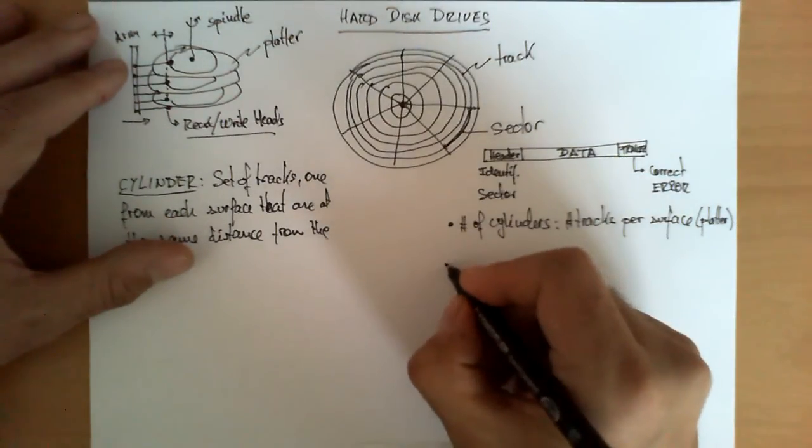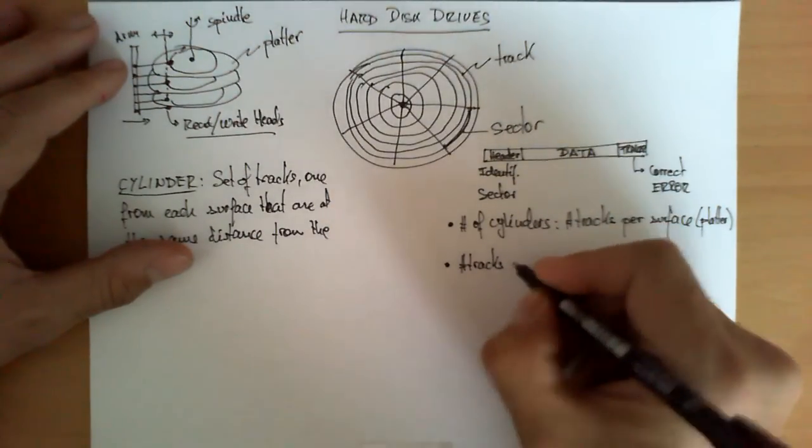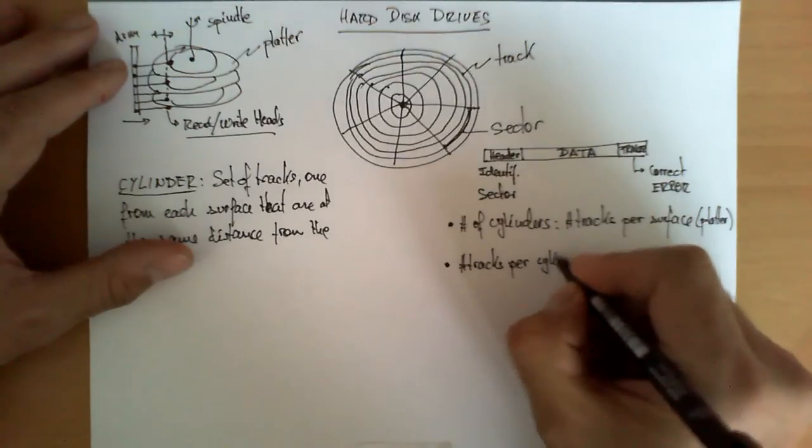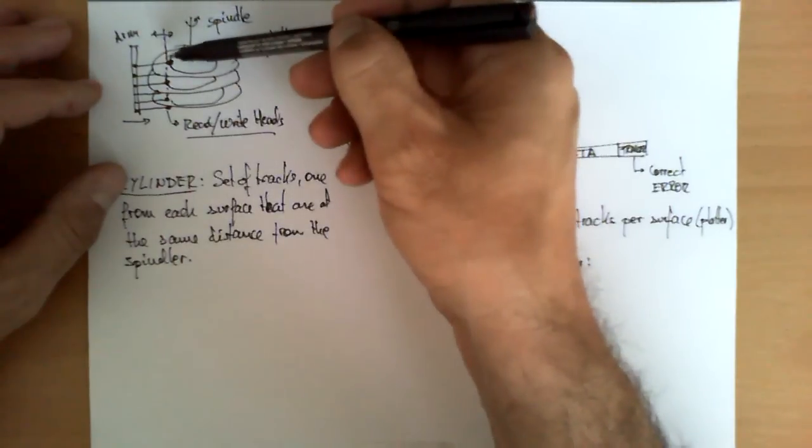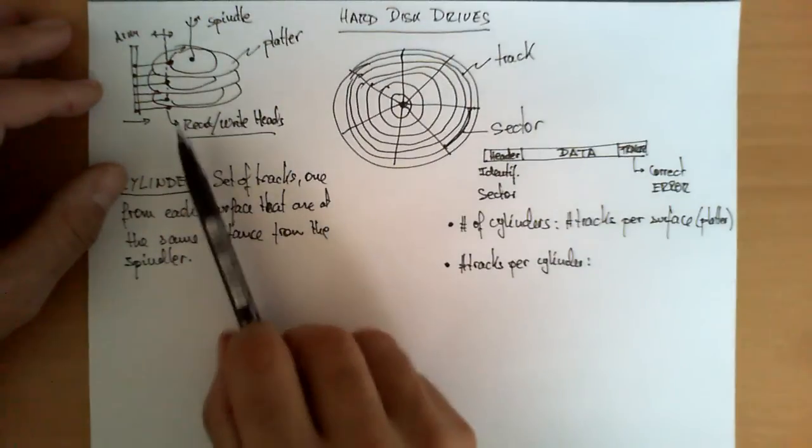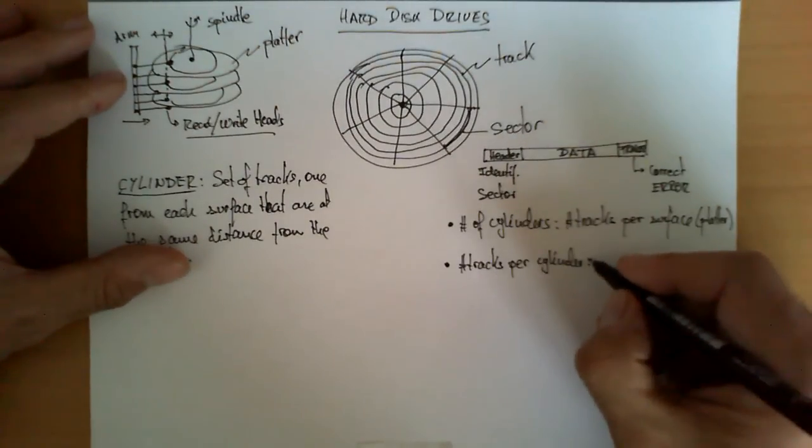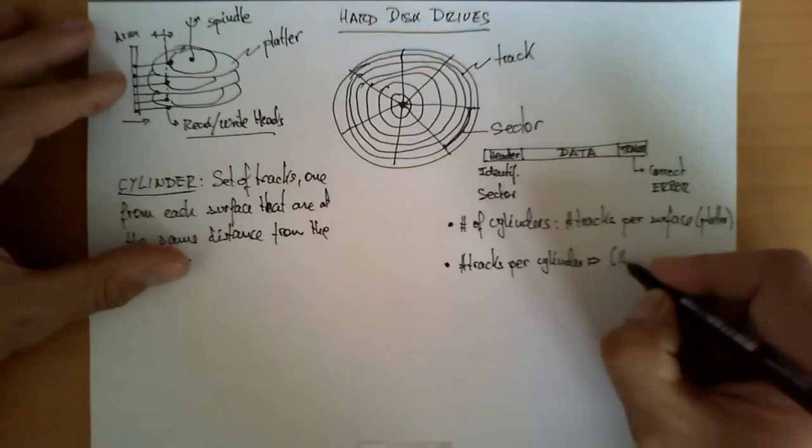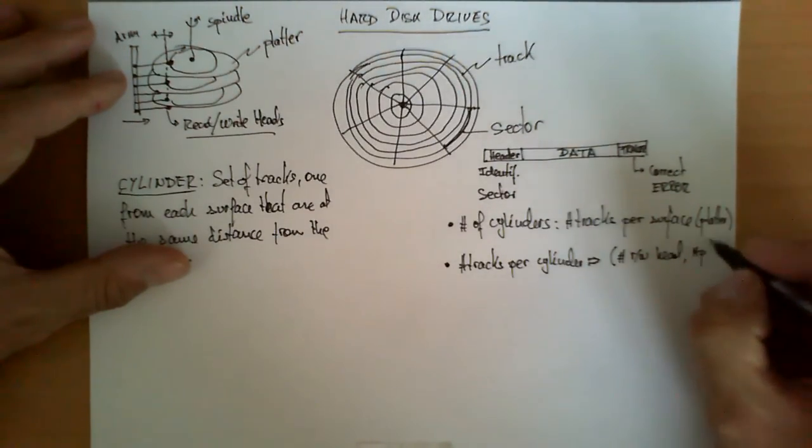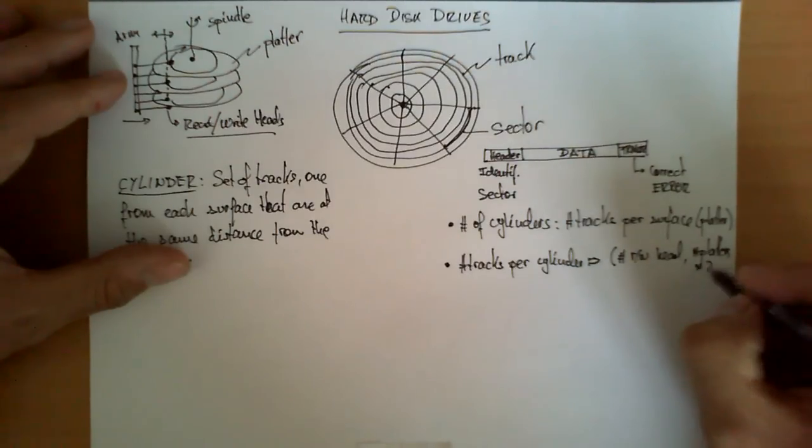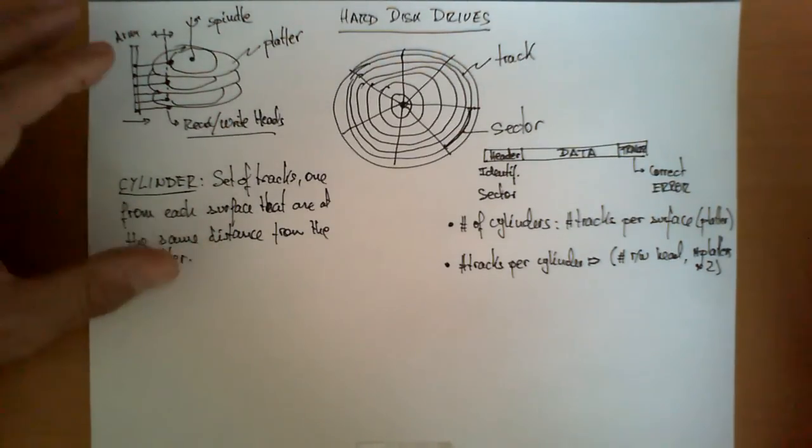The second parameter that is important for the disk is to know the number of tracks that are per cylinder. And this, as we can see here, once we have the concept of a cylinder, the number of tracks depends directly on the number of platters, surfaces, or the number of read-write heads. So this is actually the number of read-write heads, or the number of platters times two, if the platters can be written in both sides or both surfaces, which is typically the case.